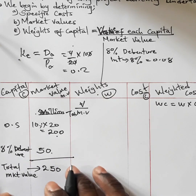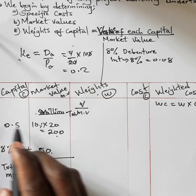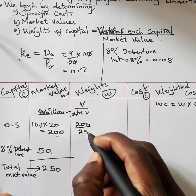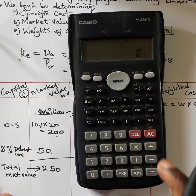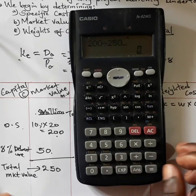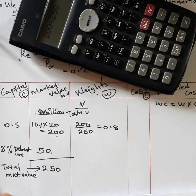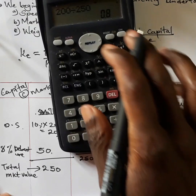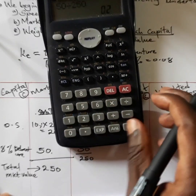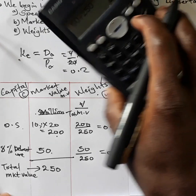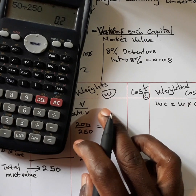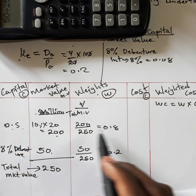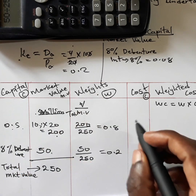To get the weights, we divide the value of each capital by the total market value of 250 million. The weight for ordinary shares is 200 divided by 250, which equals 0.8. The weight for the 8% debentures is 50 divided by 250, which equals 0.2. These are the weights for each source of capital.